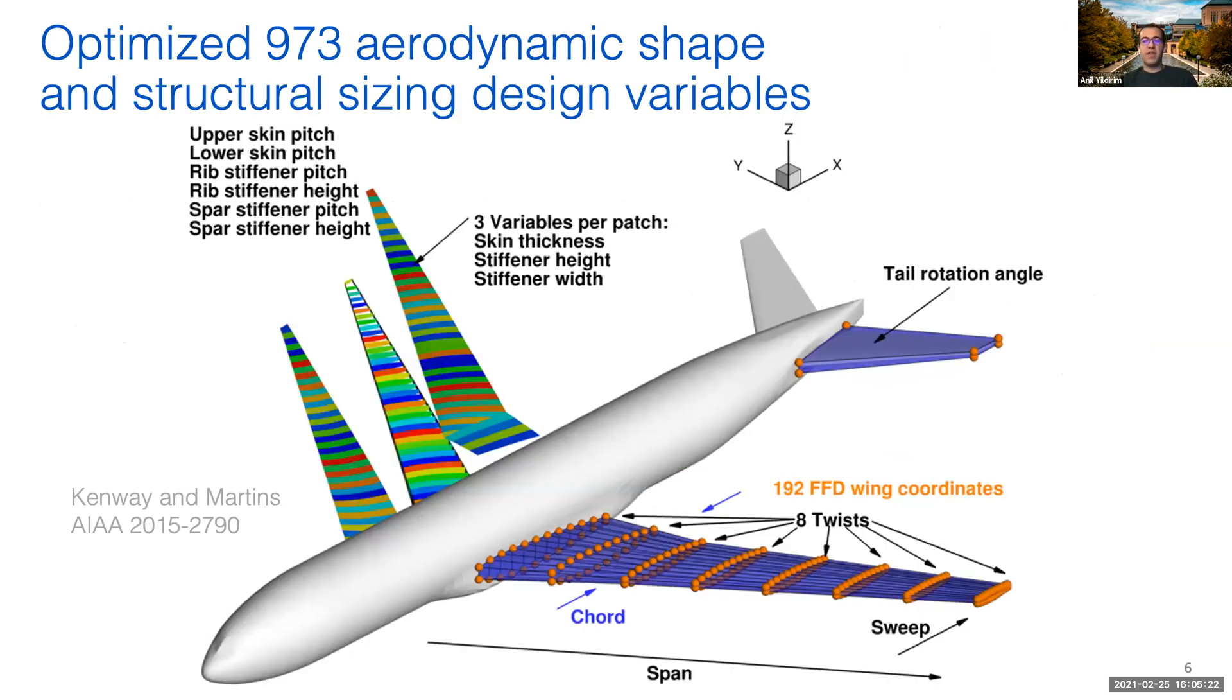To give you an idea of the scale of problems we work with, this example shows one of the larger optimization problems we've solved. It involves optimizing a 777-size aircraft while considering the coupled aerostructural design. We use computational fluid dynamics, or CFD, to model aerodynamics, which is coupled to a finite element solver to model the structural response of the aircraft. An optimization of this size requires several days of runtime on hundreds of processes, and we often have hundreds of design variables.